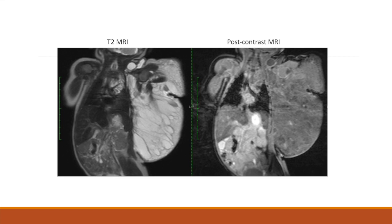To confirm our diagnosis, we look at MRI. On our T2 images on the left, we see a large lesion on the left side that is enhancing, which is consistent with a vascular malformation. And when we look at the post-contrast image on the right, we see there is no post-contrast enhancement. This is consistent with a lymphatic malformation.